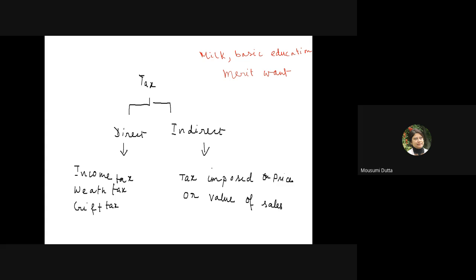This kind of taxation is what we call indirect taxation. Indirect taxation is a type of taxation where tax is imposed on the price of the commodity or on the value of sales — tax is either imposed on the price of the commodity or on the value of sales.